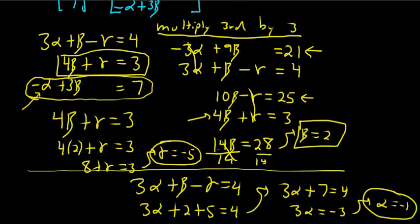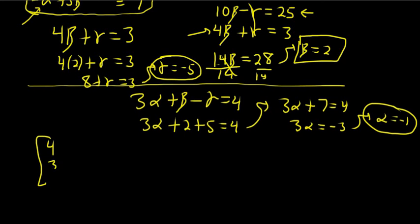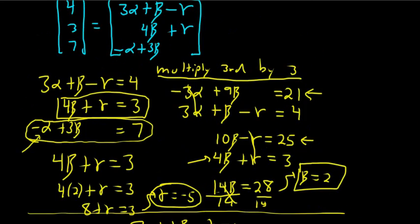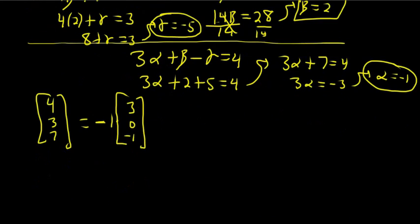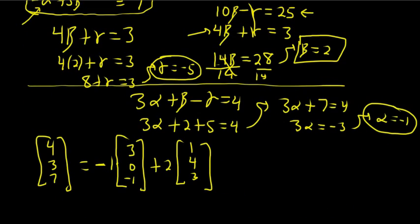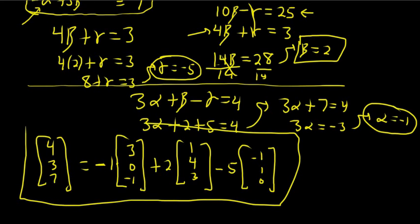We've produced alpha, beta, and gamma, and we're done. We've shown it's a linear combination. We could write it to be formal. So recall we had 4, 3, 7 equals negative 1 times 3, 0, negative 1 plus 2 times 1, 4, 3 minus 5 times negative 1, 1, 0. So that's it. We've shown that this vector is a linear combination of the others. I hope this video has been helpful to someone out there in the world. That's it.